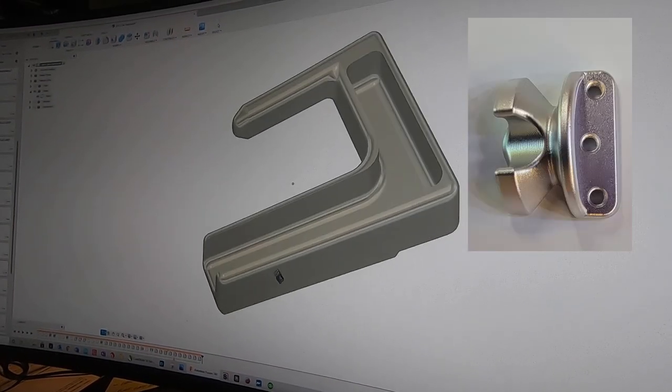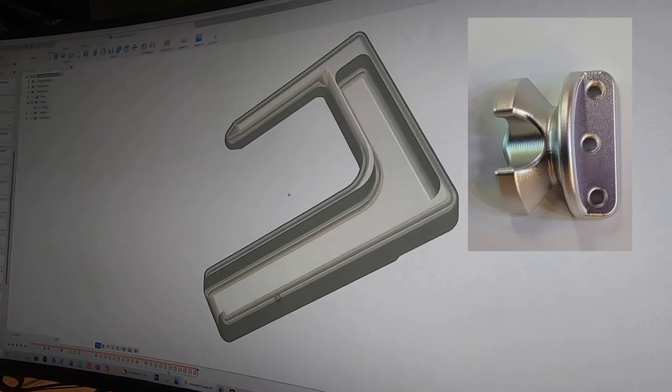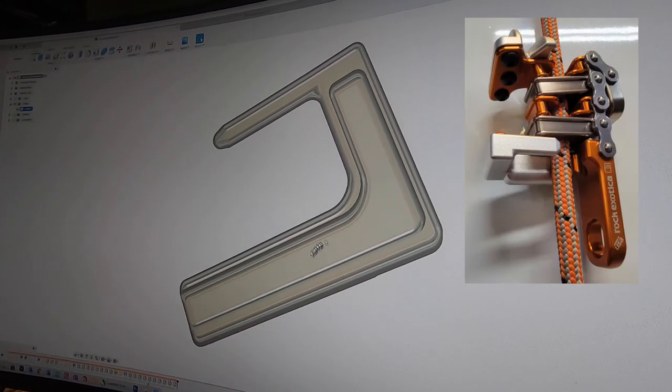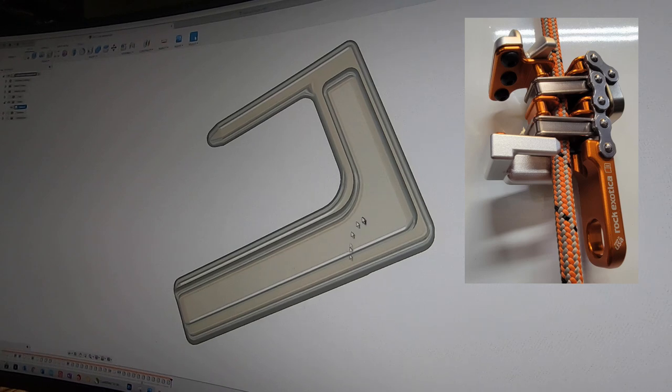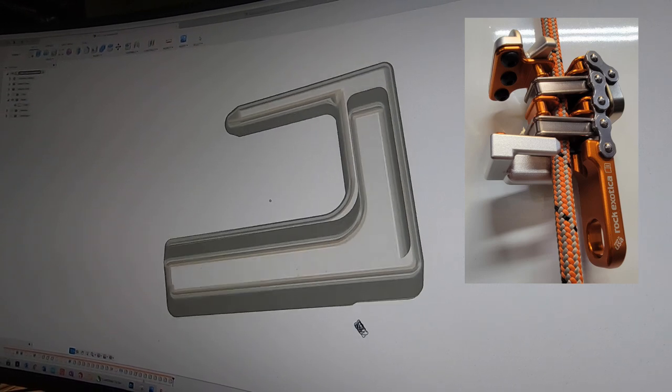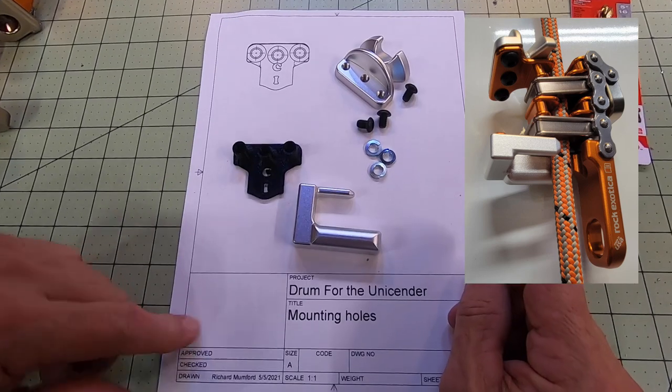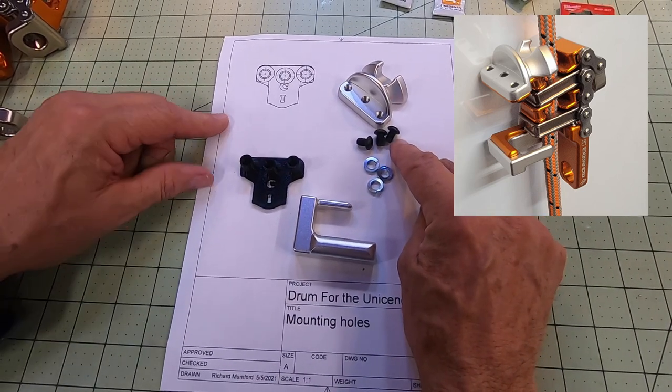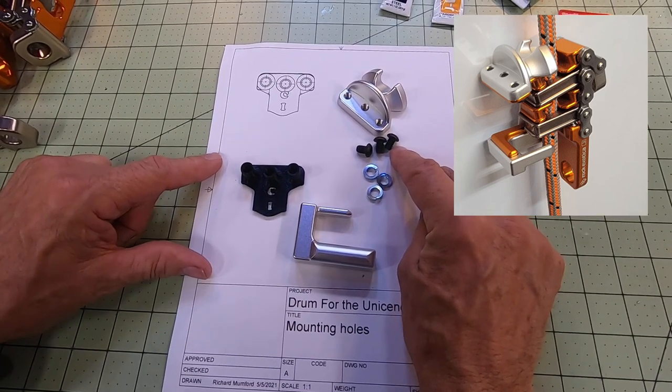And then this is the part for the L bracket and it fits very snug. We're going to put maybe a little bit of silicone or whatever in there. This is what the full kit is going to come with. It has the bolts or screws to attach the drum with some lock washers.